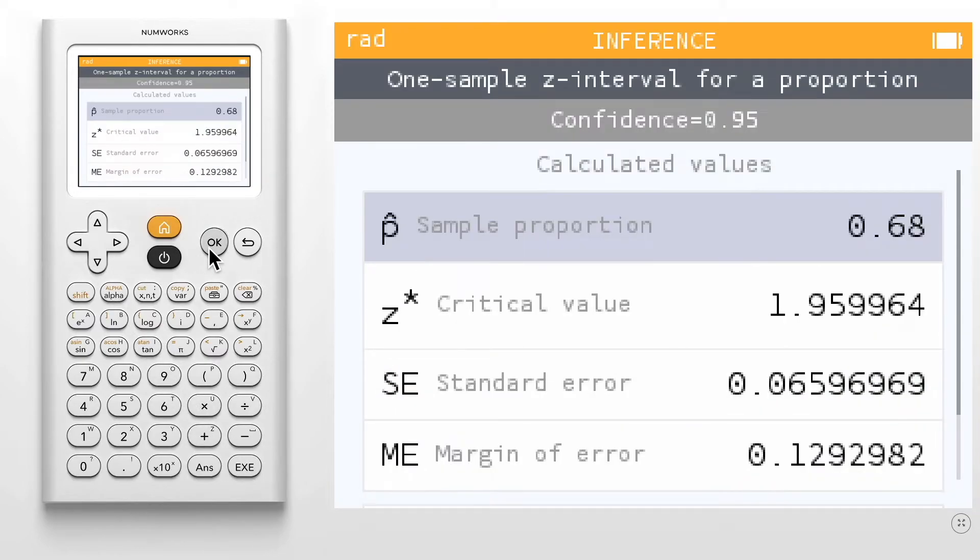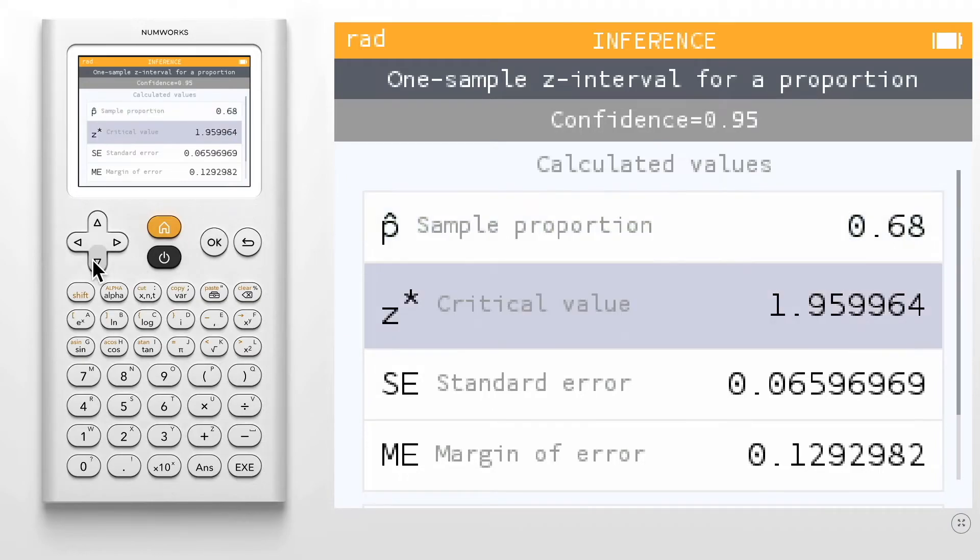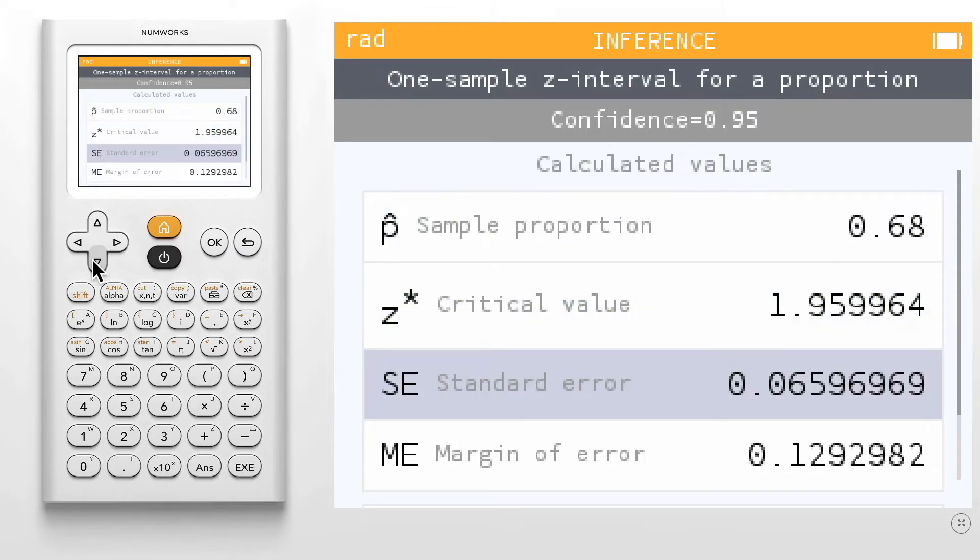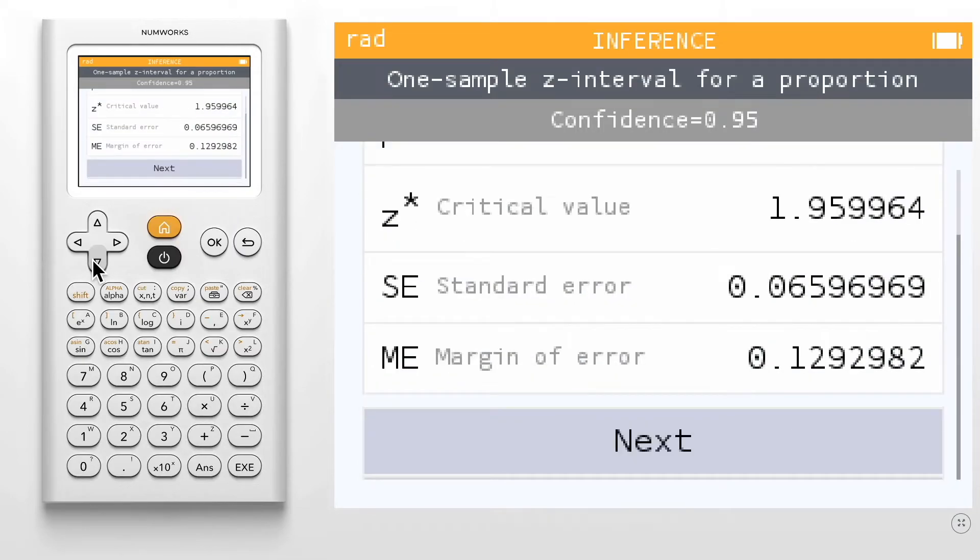We now see the calculated values for this interval, which include the sample proportion, the z star critical value, the standard error, and the margin of error. Select Next.